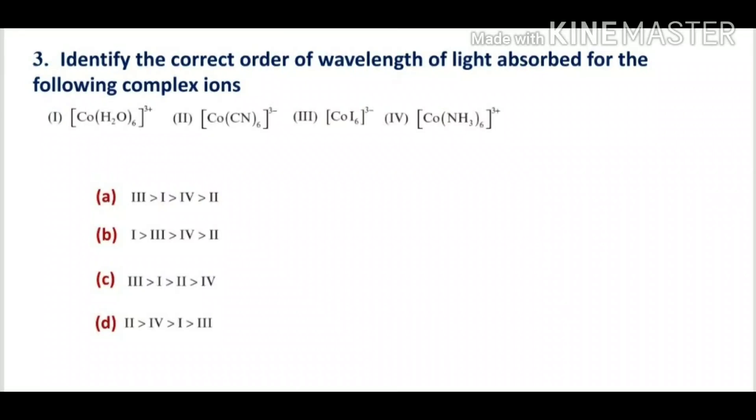The iodo ligand is the weakest ligand among all the others. So it absorbs very low energy, meaning its wavelength will be higher — it comes first in the order.